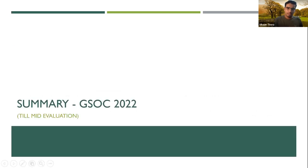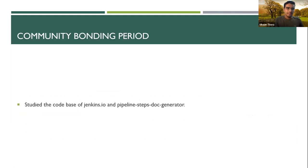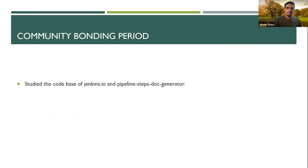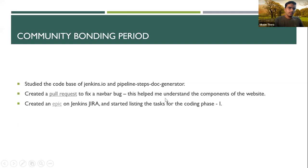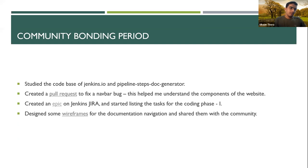I'll start with the work I've done under GSoC 2022. During the community bonding period, I spent some time studying the codebase of Jenkins.io and the PSDG repository — the two main repositories of my project's concern. I created a pull request on Jenkins.io to fix a bug, which led me to understand the CSS and layouts on Jenkins.io. Then, as my mentor Kristin suggested, I created an epic on Jenkins.io to keep our work organized, listing all tasks under it. Finally, I designed some wireframes for the UI layout to get community feedback.